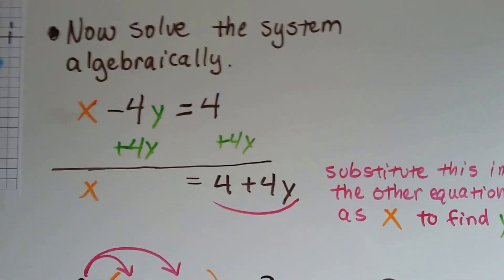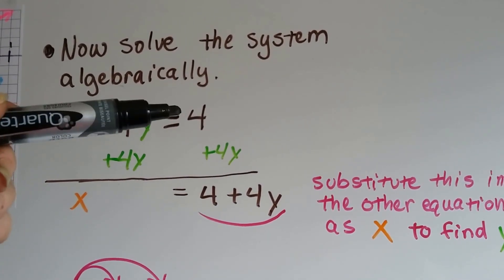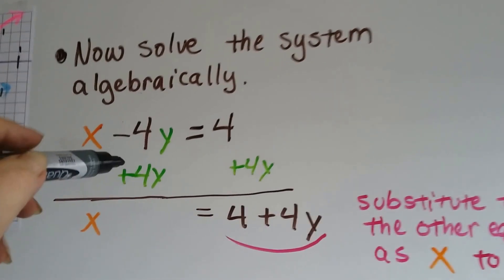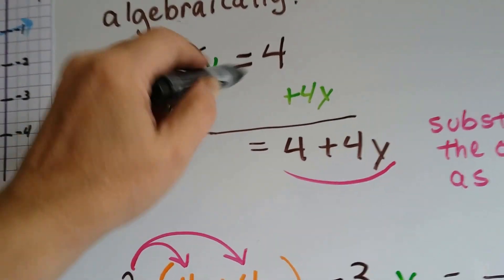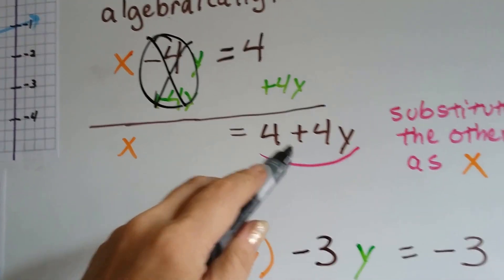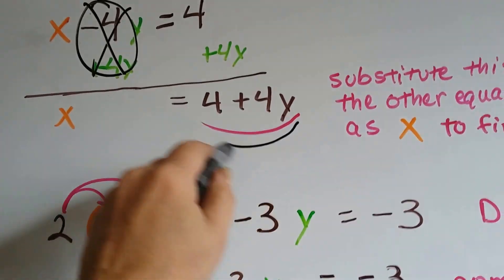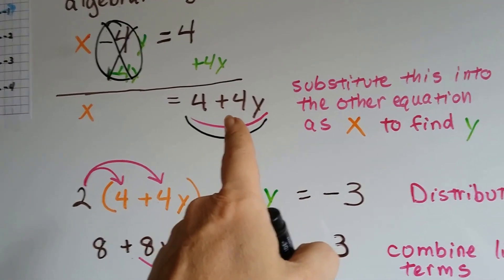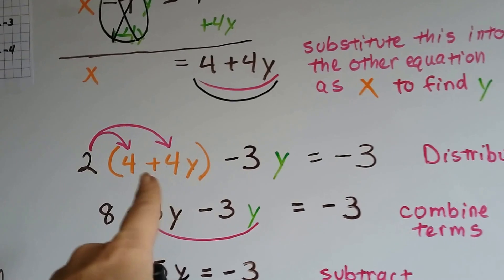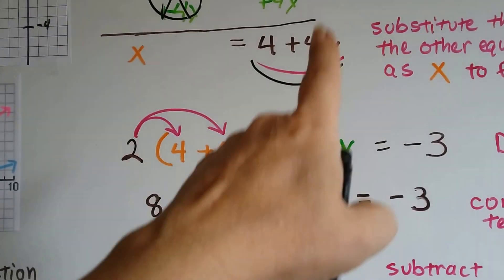Now we can solve the system algebraically. Here was our first equation, x minus 4y equals 4. So we add 4y to each side, and that creates that zero pair. And we've got 4 plus 4y on this side. That is going to take the place of x. So in the other equation where it had an x, we're going to plug in 4 plus 4y to find the y. 2x minus 3y equals negative 3. So 2x, that's going to be our x.